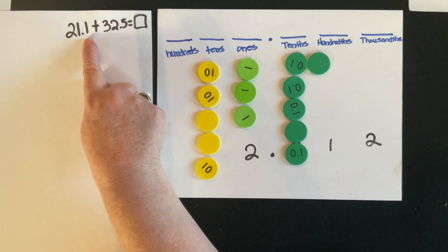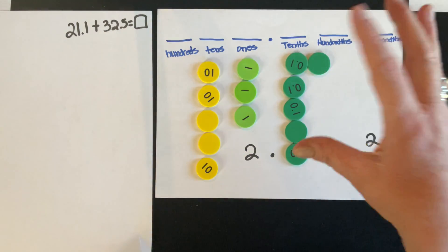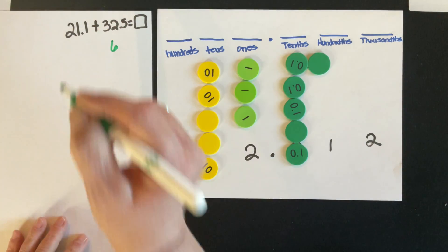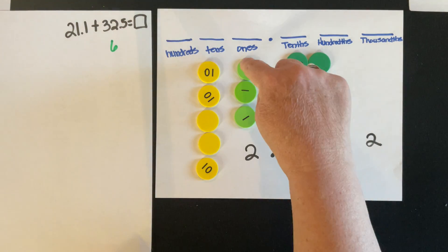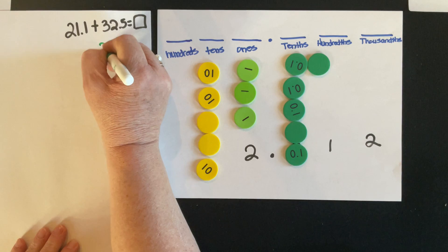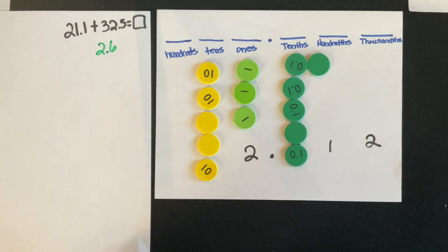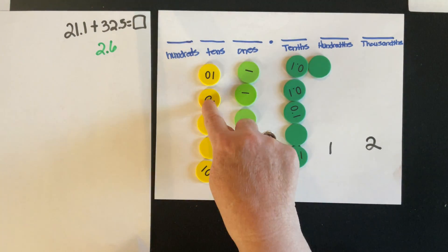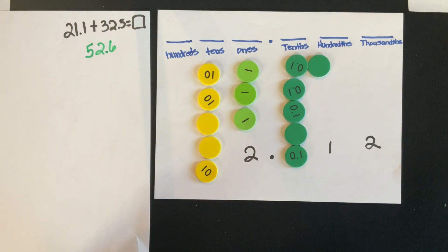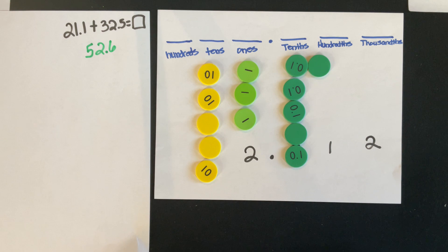When I add one-tenth and five-tenths, I have six tenths. When I add one one to two more ones, I have three ones — don't forget that decimal point. When I have two tens and add three more tens, I have five tens. There's nothing different here from whole number addition: you're simply counting the number of discs in each place value column.